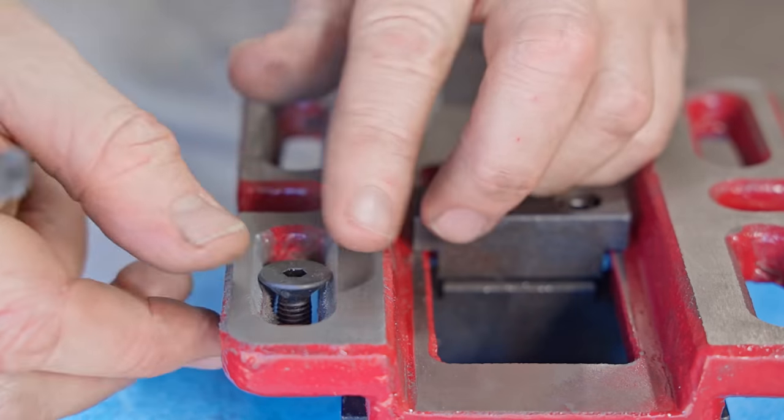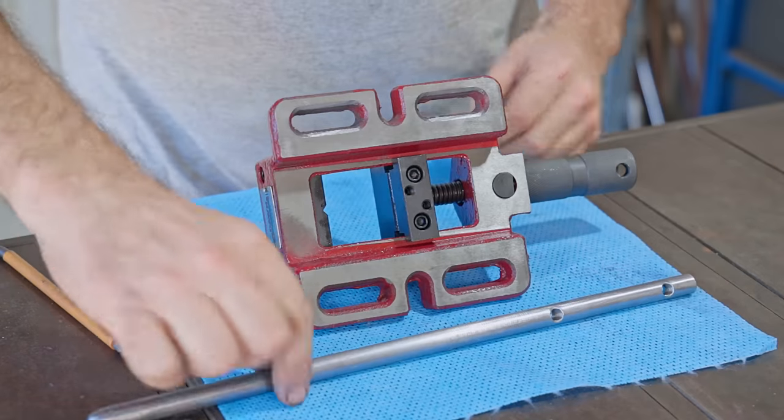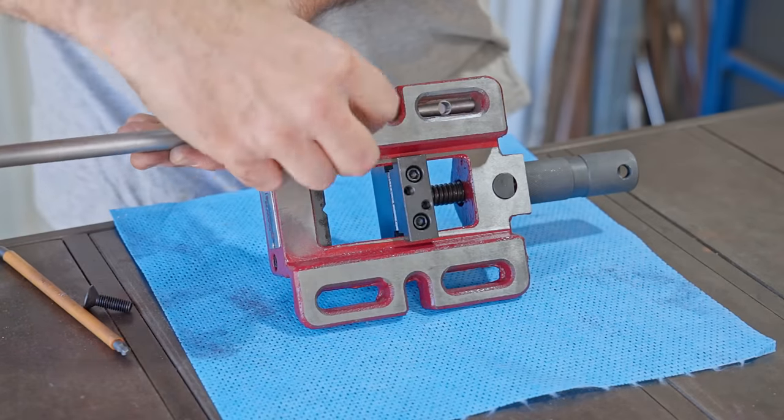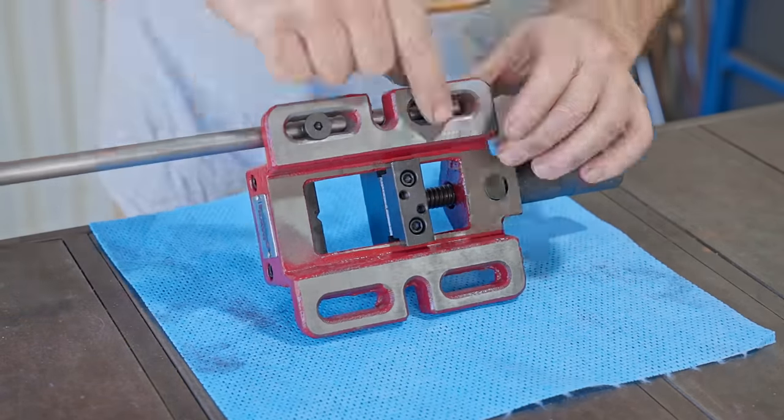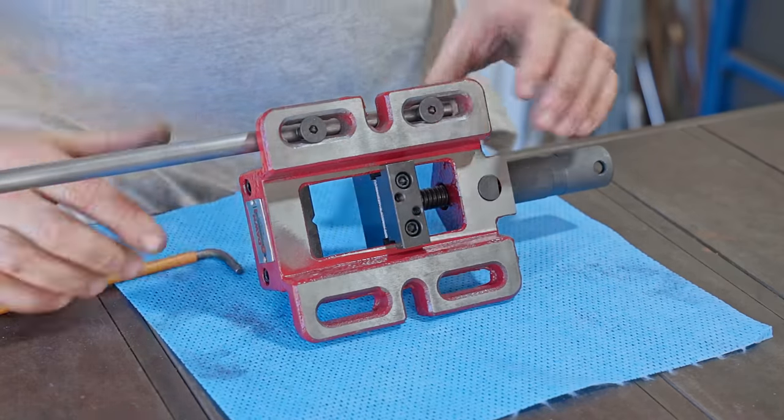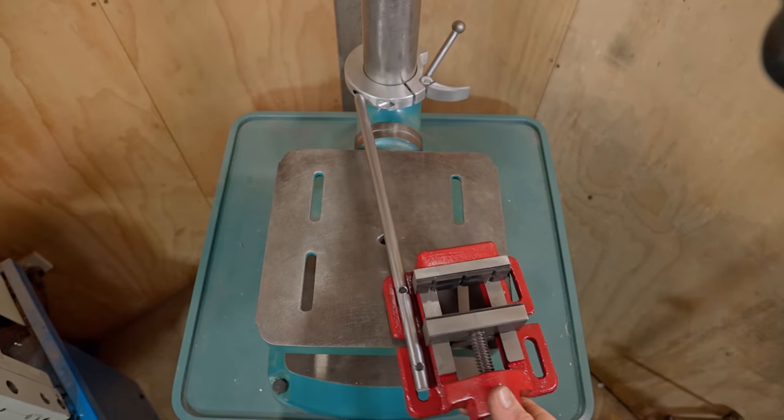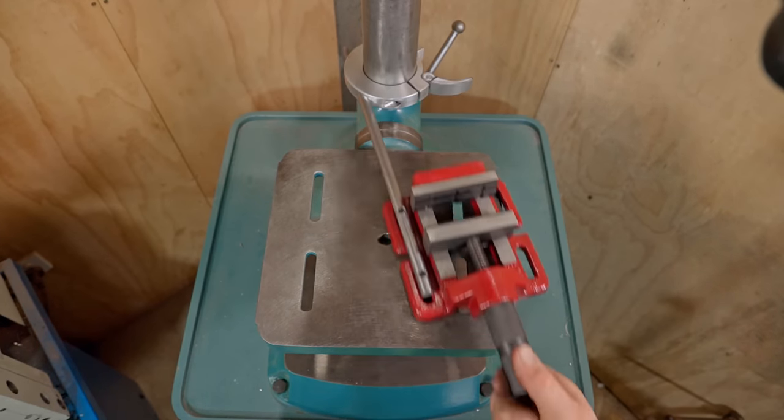You may already know that there is a similar device called a float lock vice. If you do a search you'll find one. It looks a great item, but when I saw one my first thought was it would be better with a regular drill press vice. I haven't used one though, so I could be wrong, but that's why I'm making this one.